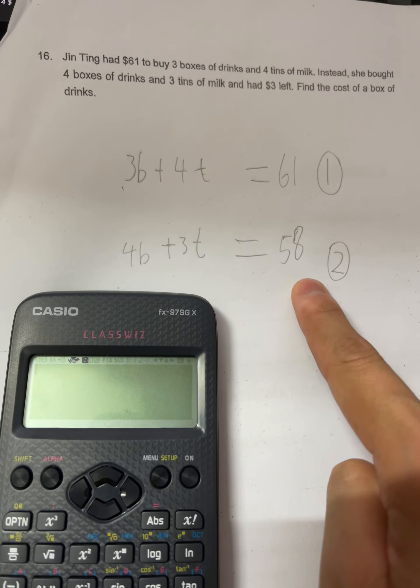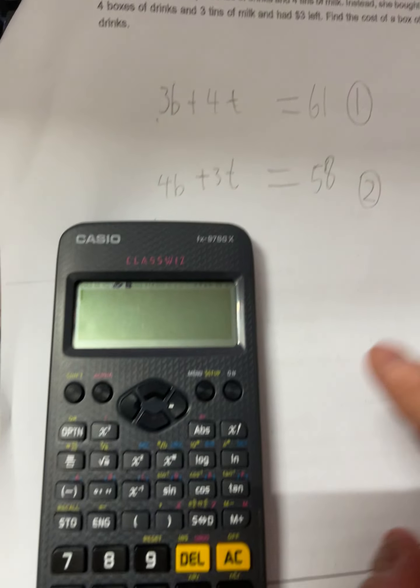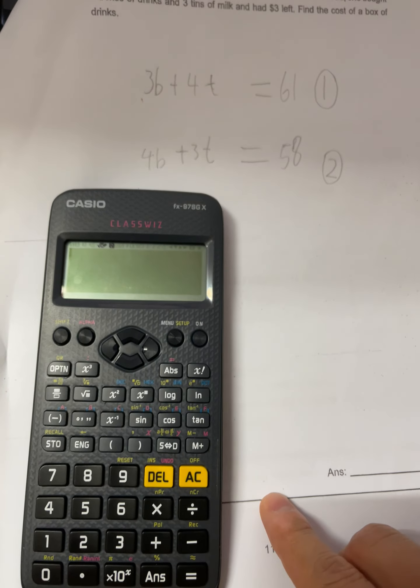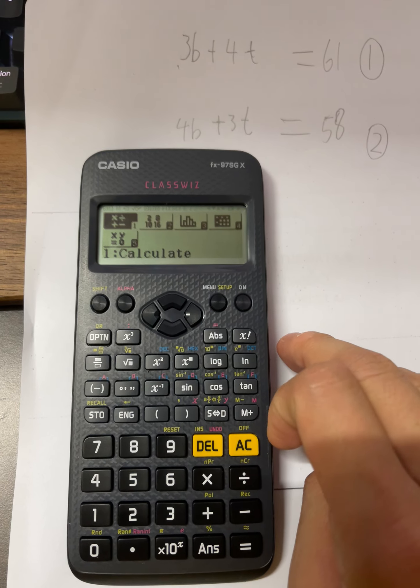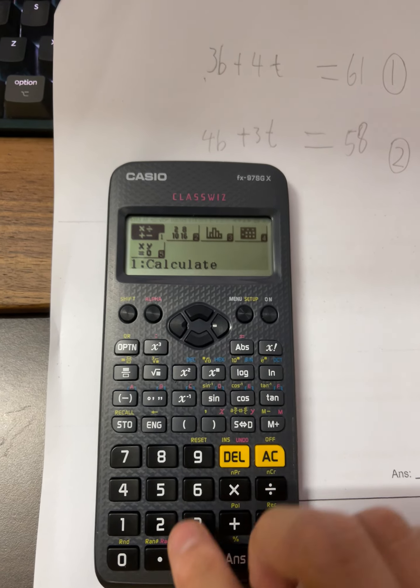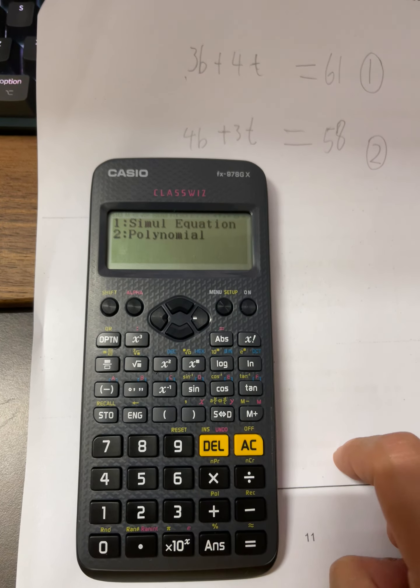...plus 3t equals 58. So this is case one, case two. How you use your calculator to solve this case one, case two question is you go to setup and then you go to five.